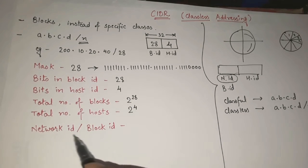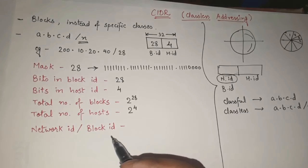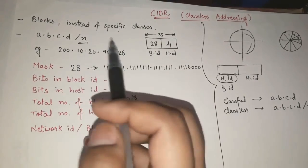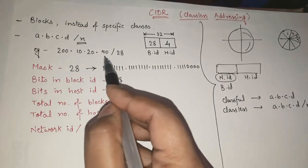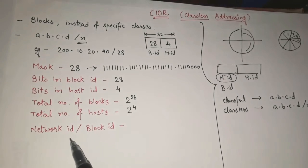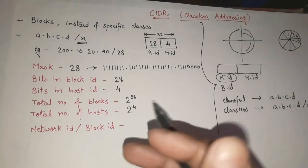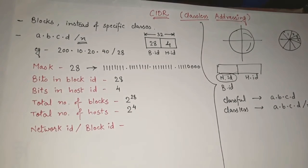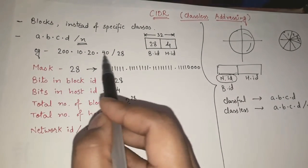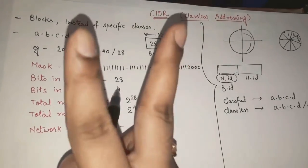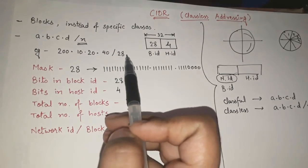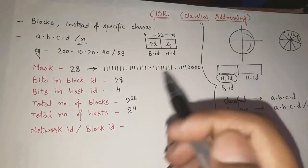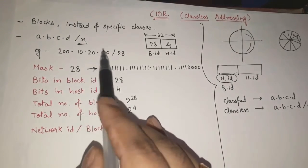Now, finding the network ID or block ID is the most important and frequently asked part. Whenever a classless address is given, you are given two things: the IP address and the subnet mask. To find out the network ID or block ID, the simple thing to do is perform an AND operation between these two.